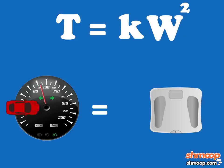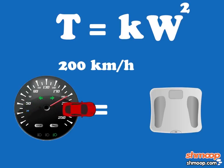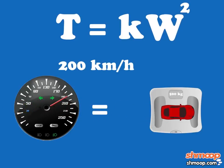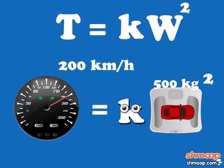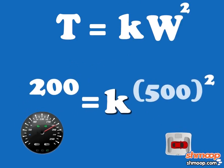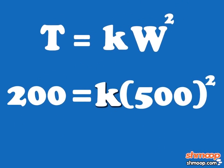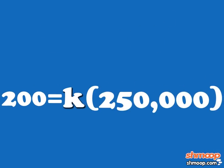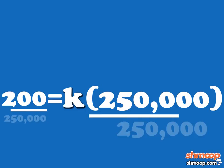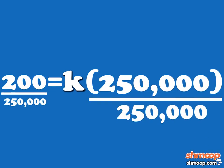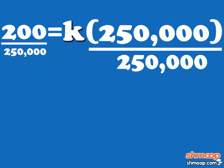We're given two values: a top speed of 200 and a weight of 500. When we plug them into our equation, we get 200 equals K times 500 squared, which equals K times 250,000. When we divide both sides by 250,000, we are left with K equals 0.0008.